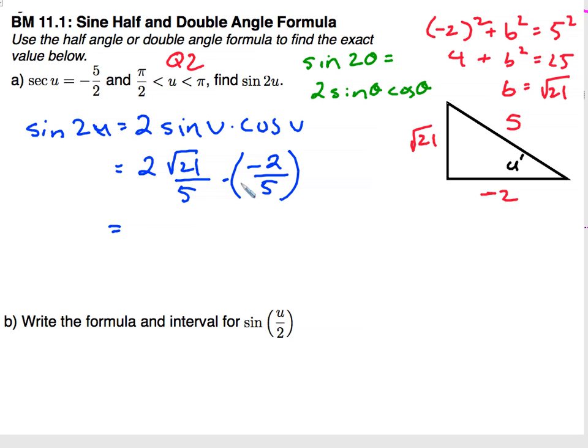So simplifying that out, 2 times 2, you get negative 4 square root 21 over 25. And there is our final answer.